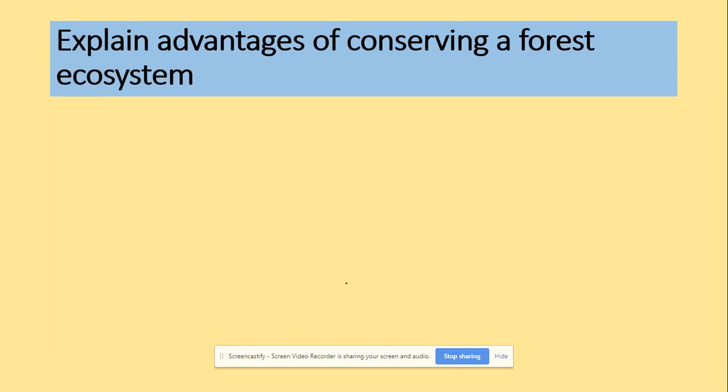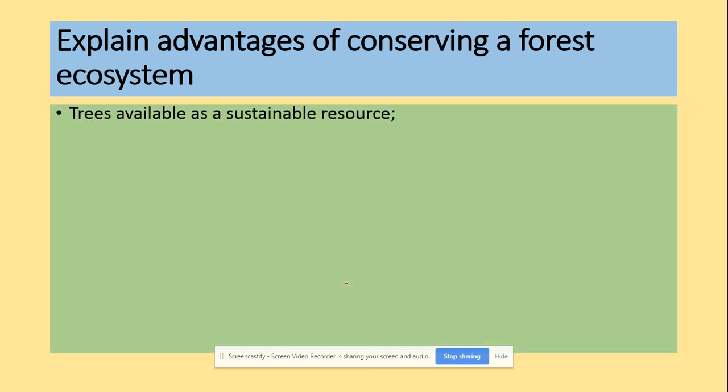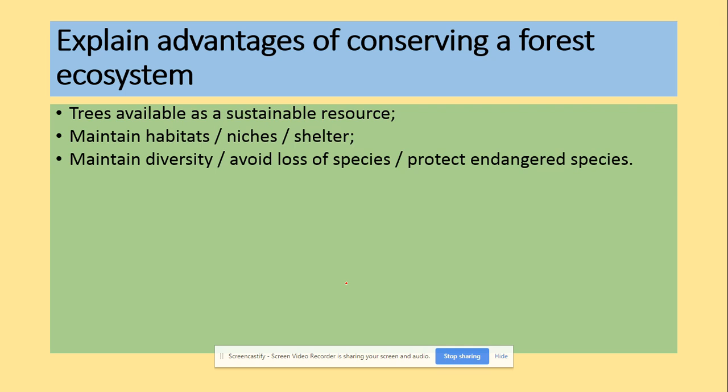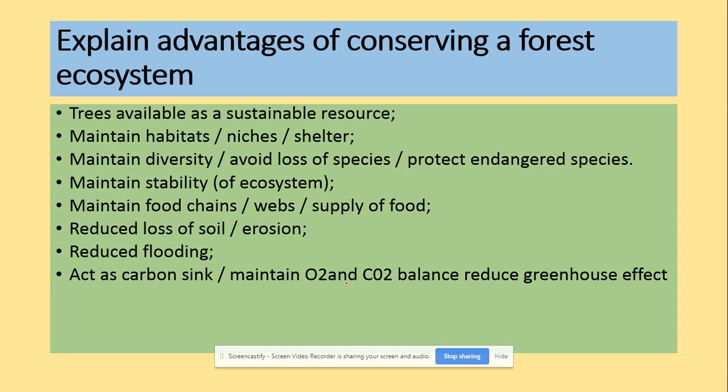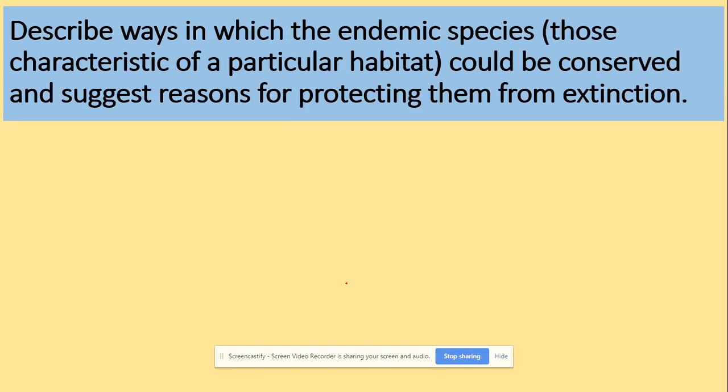We're looking here at some model answers. Explain advantages of conserving a forest ecosystem. We've got lots of clear ideas: trees available as the resource, maintaining habitats, niches, maintain diversity, maintain stability of the ecosystem, maintain food chains and webs, reduce loss of soil, reduce flooding, act as carbon sink, maintain oxygen and carbon dioxide balance, reduce global warming, source of medicines.